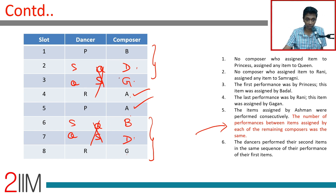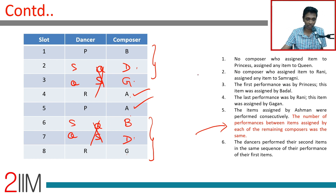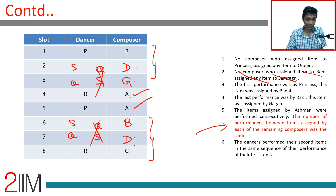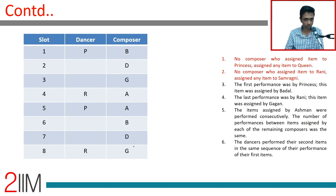Let's verify: position 1 is B — B is not assigned to Q, so far so good. No composer assigned to Rani assigned to Samragni — Rani is assigned by A and G, which checks out. Statement one gives us the order P-S-Q-R for dancers and B-D-G-A then A-B-D-G for composers across the eight performances.